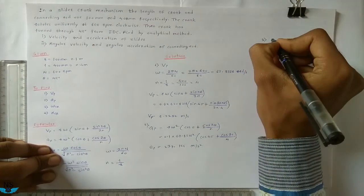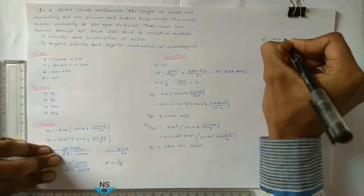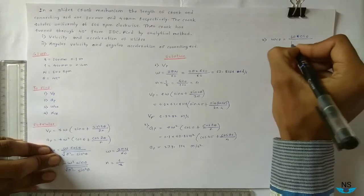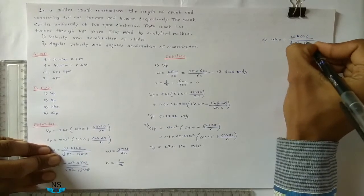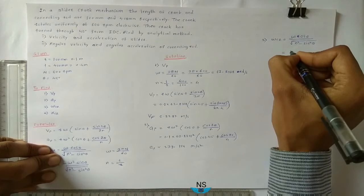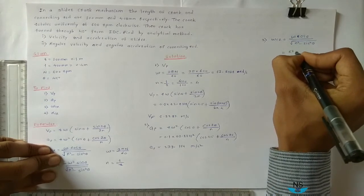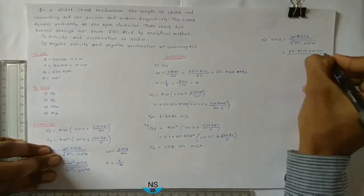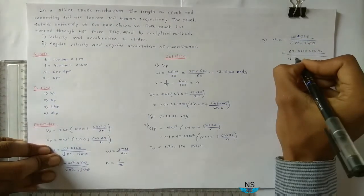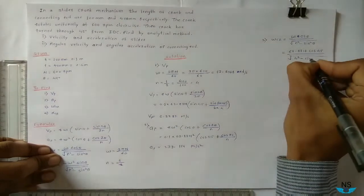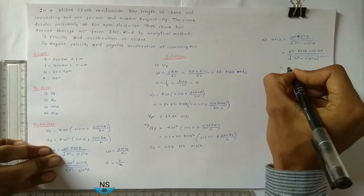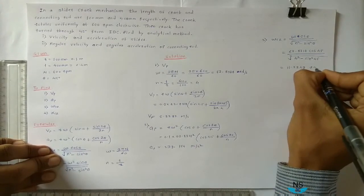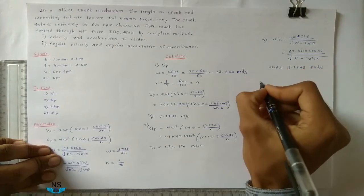Third, angular velocity of connecting rod: ω_cr equals ω·cos θ divided by the square root of (n² − sin² θ), equals 62.8318 × cos 45° divided by the square root of (4² − sin² 45°). ω_cr equals 11.2849 rad/s.